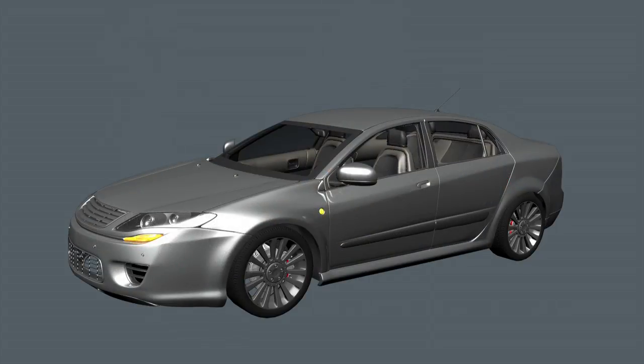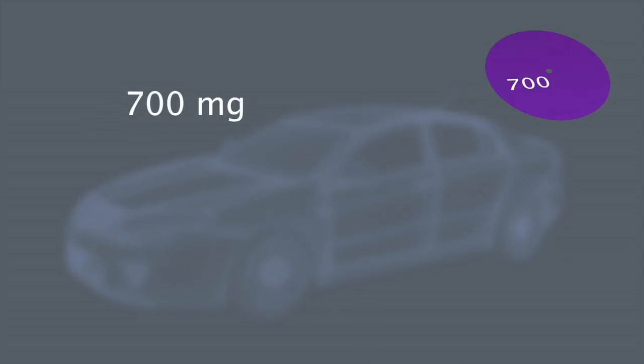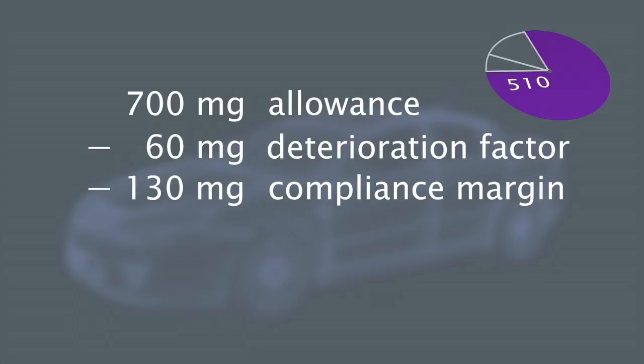Breaking down these sources into emission allotments can help create a blueprint for control. Start with the new 700 milligram allowance, subtract a 60 milligram deterioration factor and a 130 milligram compliance margin to allow for differences in testing equipment and normal variations. The target for the entire vehicle is now only 510 milligrams.